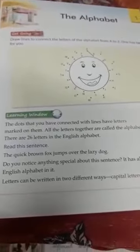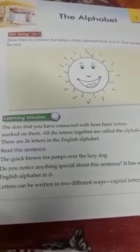We have 26 letters in the English language. All the letters together are called alphabets. Letters can be written in two different ways — these are capital letters and small letters.